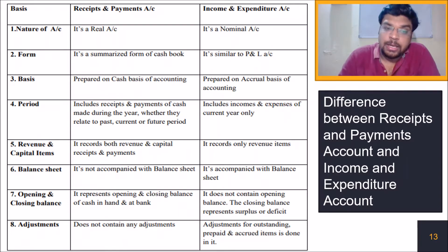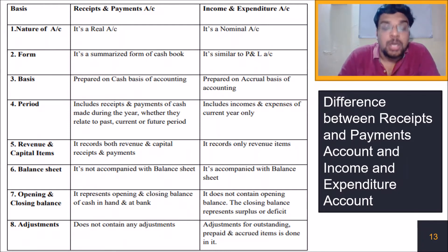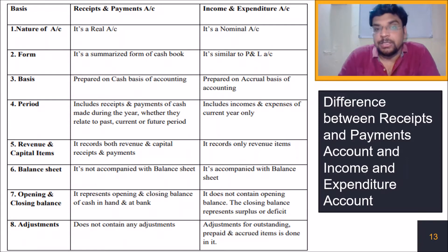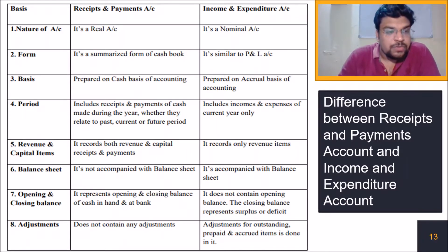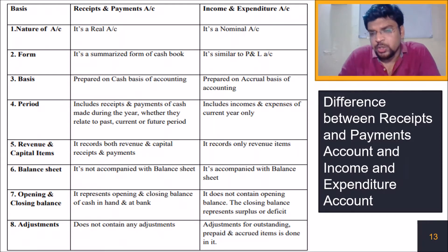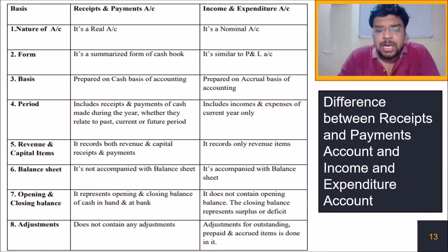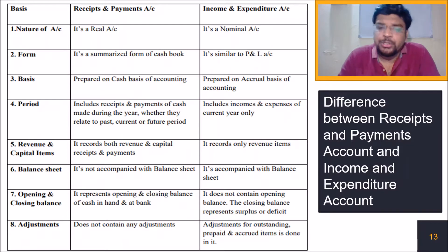In the receipt and payment account, all amounts — whether related to the previous year, current year, or next year — are recorded because the transaction happened in cash. But in the income and expenditure account, only incomes and expenses of the current year are recorded, whether received or not, due to the accrual basis. Regarding revenue and capital items, the receipt and payment account records both revenue and capital receipts and payments, while the income and expenditure account records only revenue items. The receipt and payment account is not accompanied by a balance sheet, but the income and expenditure account is accompanied by a balance sheet.